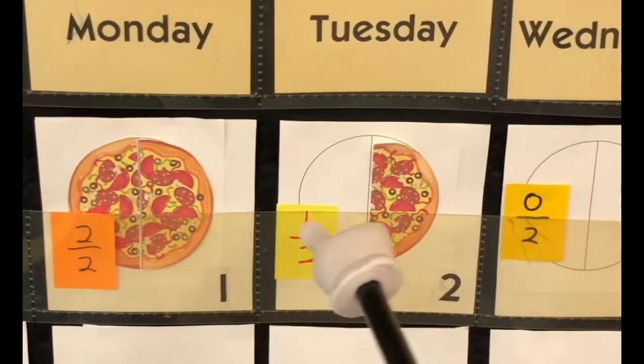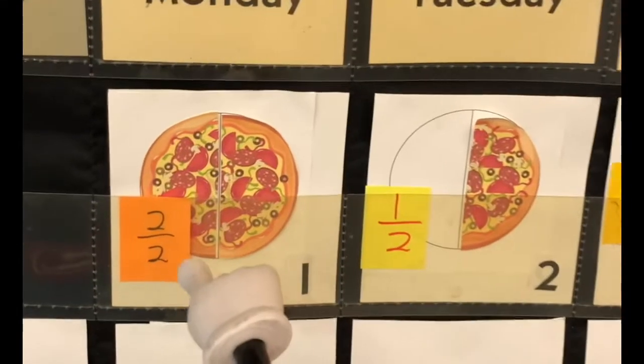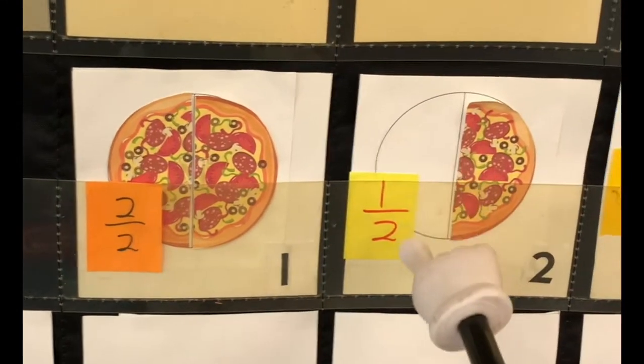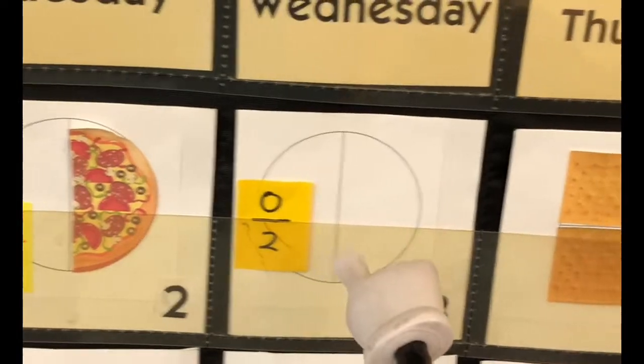We have a food fraction pattern. We started out with pizza. We had two halves, one half, zero halves.